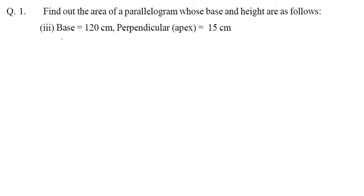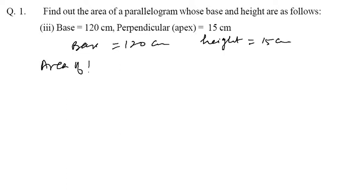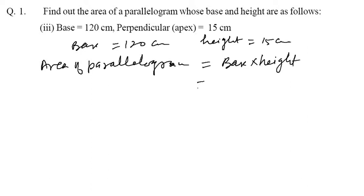Come to the third part of Question 1. Base is given as one hundred twenty centimetre and height is given as fifteen centimetre. Area of parallelogram is equal to base into height — one twenty into fifteen. Multiplying: fifteen twos are thirty, carry three; fifteen ones are fifteen plus three is eighteen. So eighteen hundred square centimetre. That is your answer.